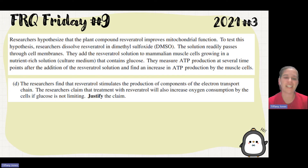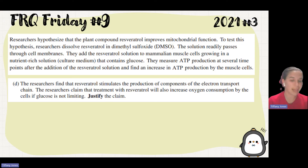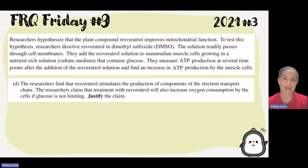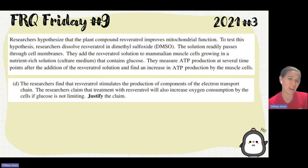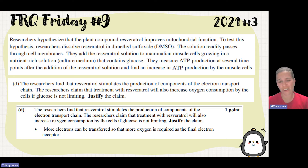The last question asks us to justify a claim. The researchers find that the plant compound stimulates production of components of the electron transport chain, and they claim the treatment will increase oxygen consumption by cells if glucose is not limiting. If there's an unlimited supply of glucose and improved functionality of the electron transport chain, you'd have more oxygen consumption, because the electron transport chain's final electron acceptor is oxygen. So with more electrons in the chain, you require more oxygen to accept those electrons.